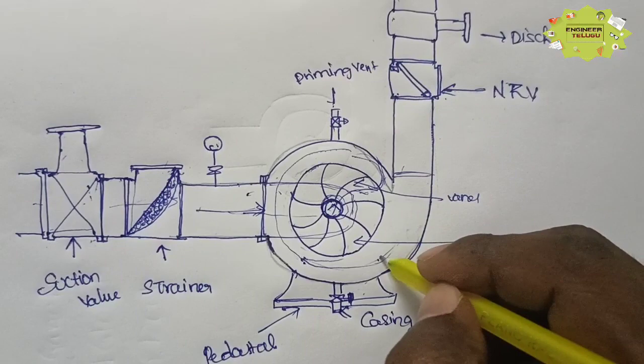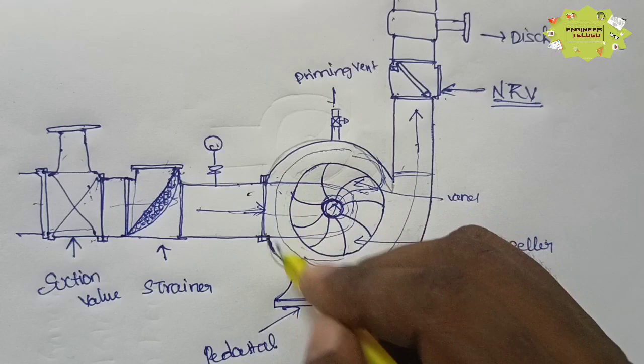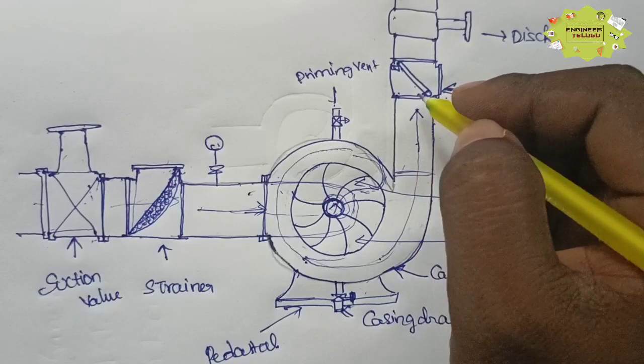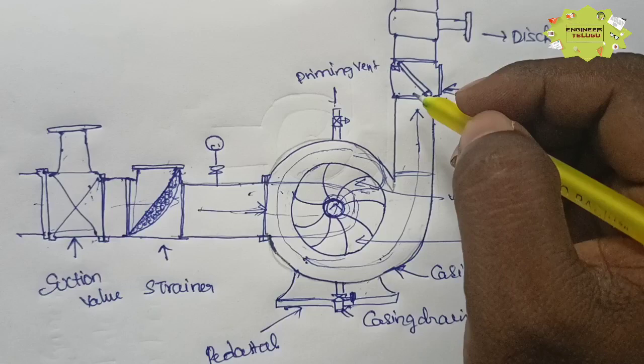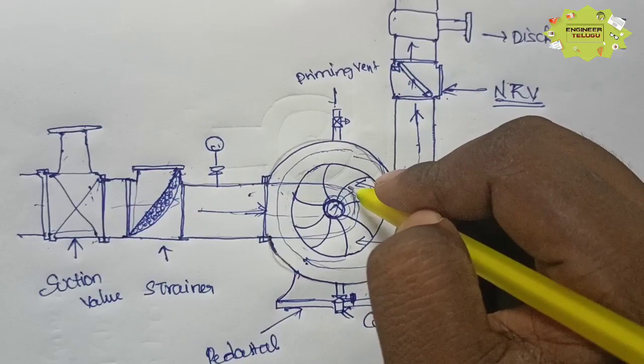This is the discharge. The discharge has an NRV — this is the non-return valve. When the pump is running and pressure builds up, flow passes through. The NRV closes when the pump stops, preventing backflow. This is the basic design of the pump flow path.